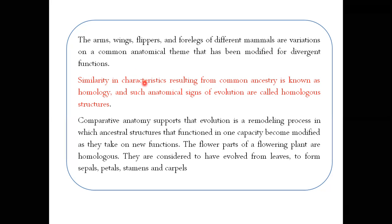Similarity in characteristics resulting from common ancestry is known as homology. Similarity in characteristics due to common ancestry is called homology. Such anatomical signs of evolution are called homologous structures — structures which are similar in structure but may be different in function. Those whose anatomy is the same are called homologous structures.